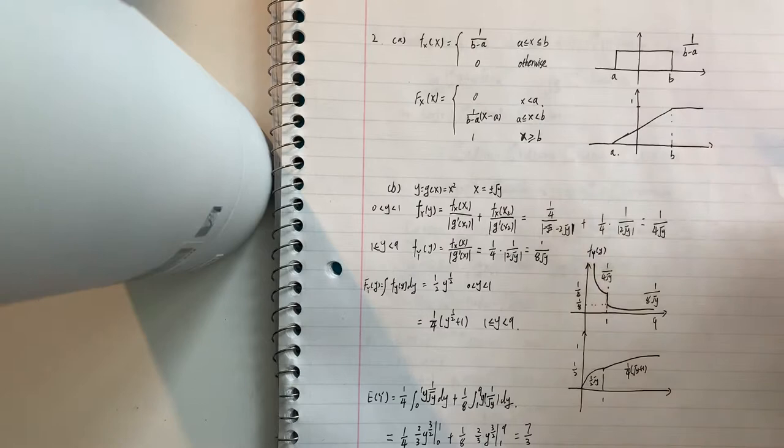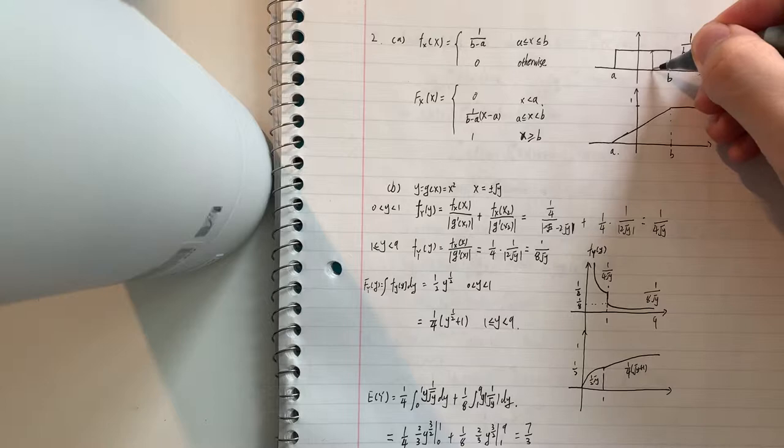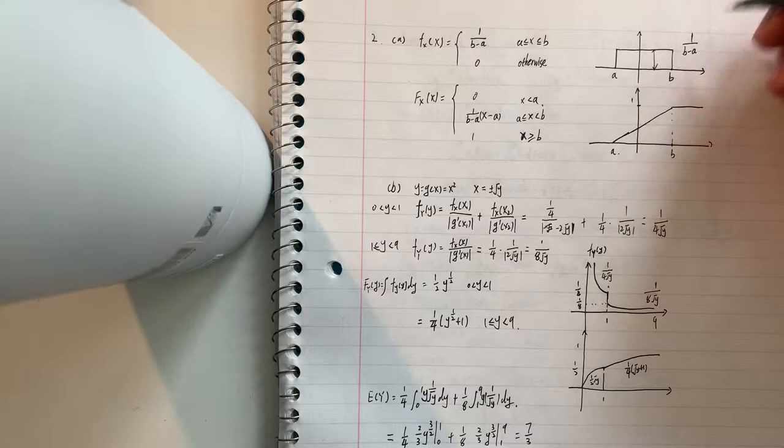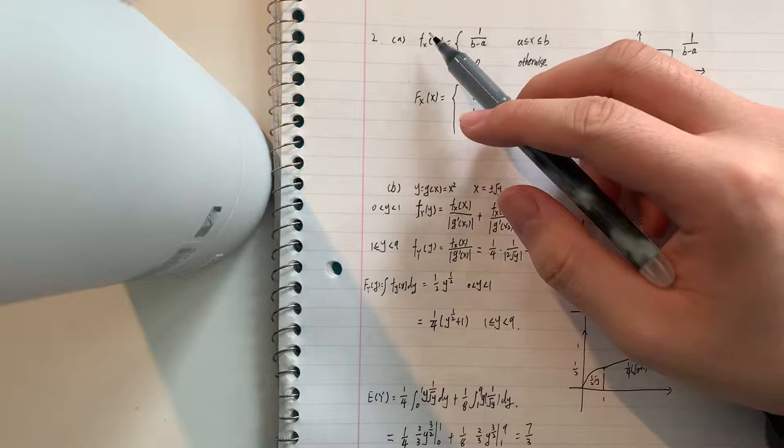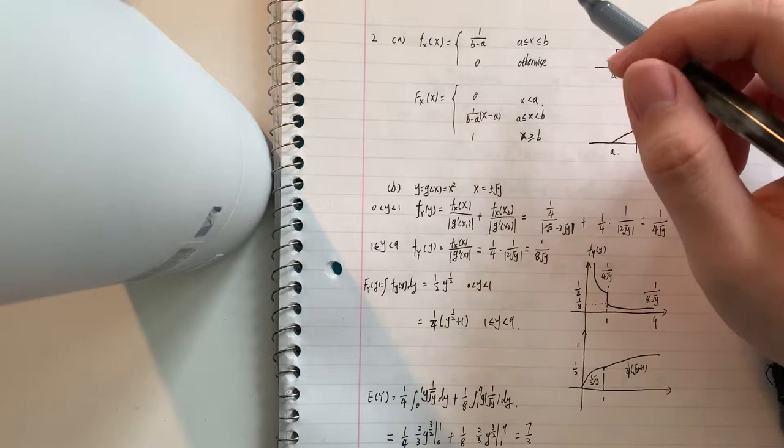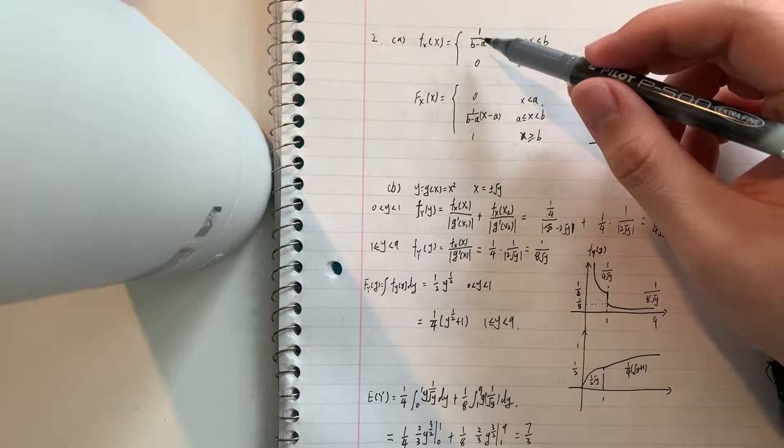And after that we know the height of this rectangle is 1 divided by b minus a. And after that we know the function f of x, when x is larger than or equal to a and smaller than or equal to b, is equal to 1 divided by b minus a, otherwise zero.